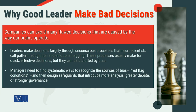First of all, we are going to talk about how companies can avoid many flawed decisions that are caused by the way our brains operate, because our brains sometimes have reflex actions and those reflex actions are not actually accompanied by rationality. So we have to see how leaders are going to define different decisions. Leaders make decisions largely through unconscious processes — basically their brain waves and vibes — which come out of neuroscientific procedures and are also called pattern recognition.